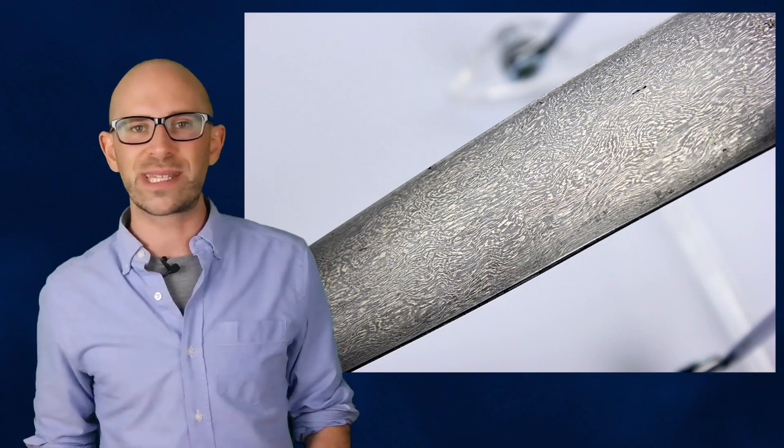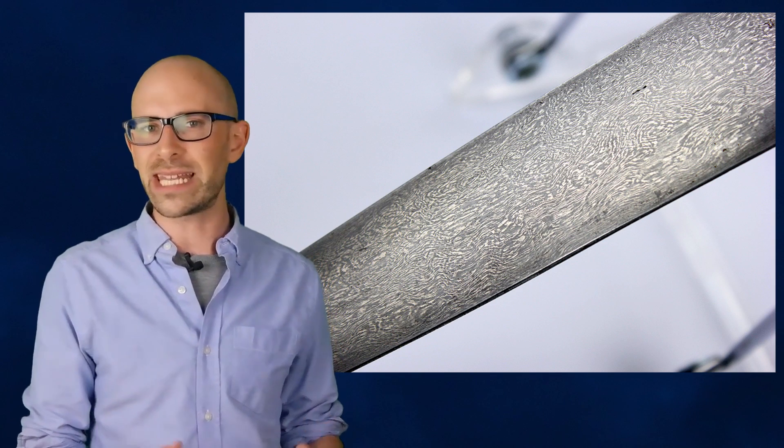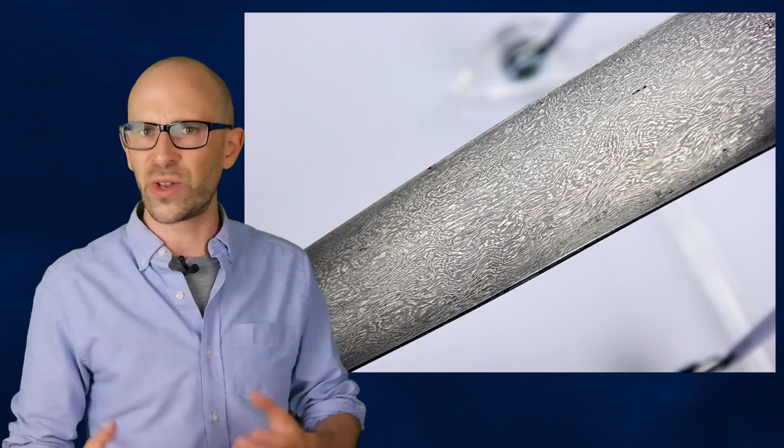Damascus Steel. During the Middle Ages, swords made out of a metal known as Damascus steel were produced in the Middle East by using a raw material known as wootz. The Damascus steel was so strong that it is said it could cut through any other type of sword.